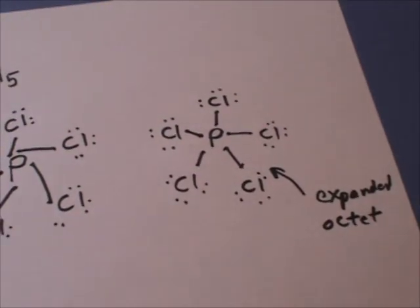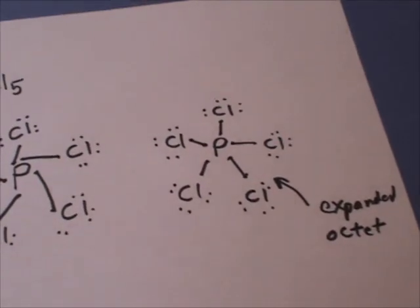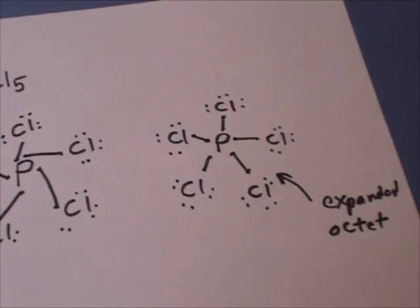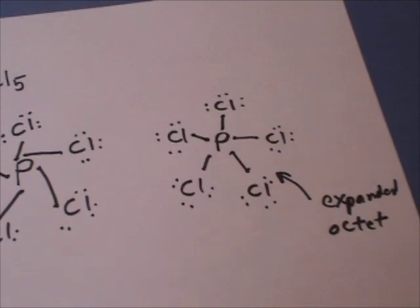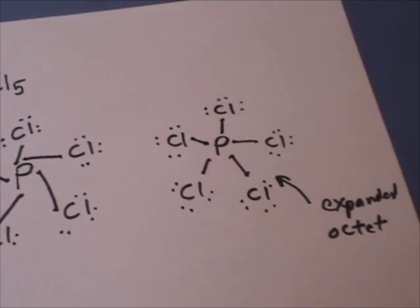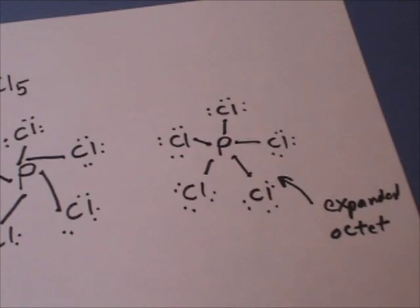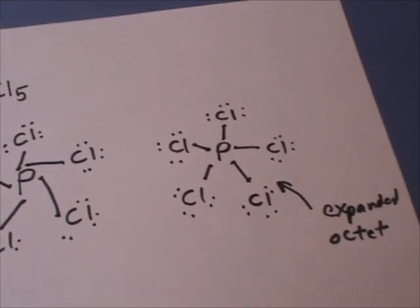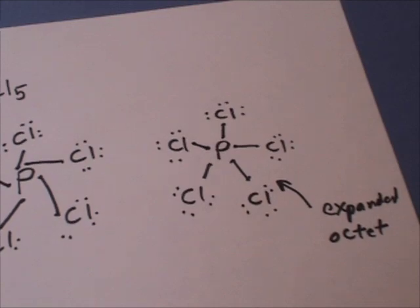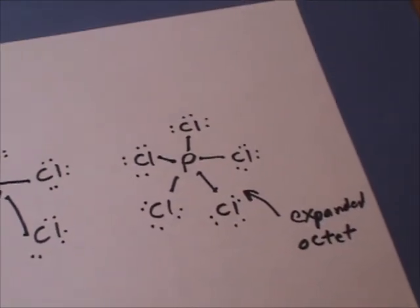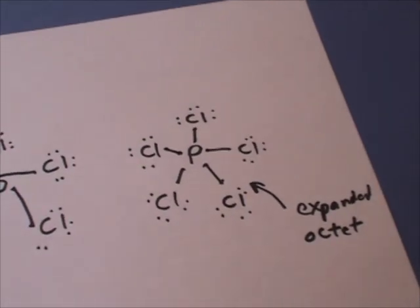The only atoms that can expand their octet are period three, four, five, six and below if you're looking at the periodic table. So period three and down on the periodic table are able to expand their octet because they have d electron orbitals for them to go into.